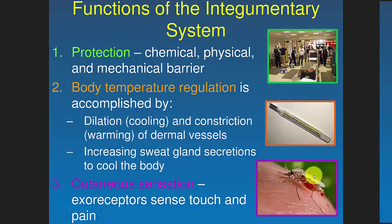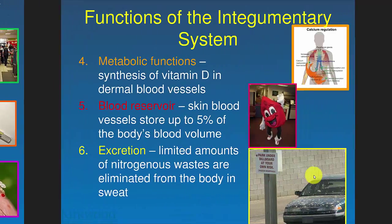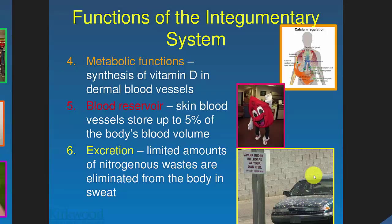Cutaneous sensation gives you information about the outside world. Some of that information could do you harm, like a mosquito, so cutaneous sensation also plays a role in your immune system. Metabolic functions: the skin makes vitamin D, which then passes through the kidney where it becomes an active form of vitamin D that helps you absorb calcium.